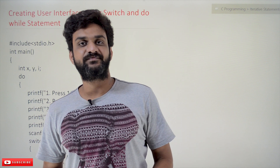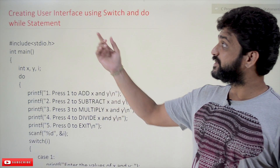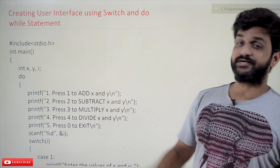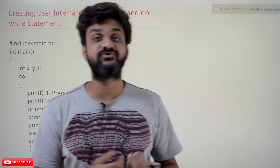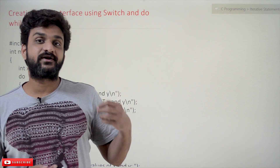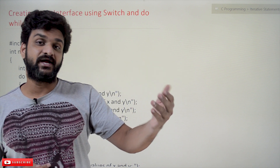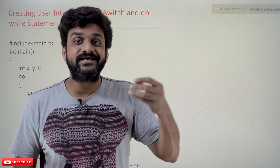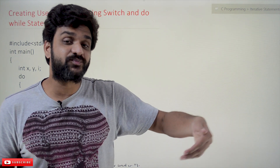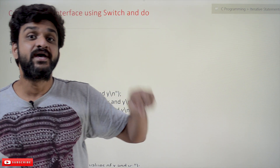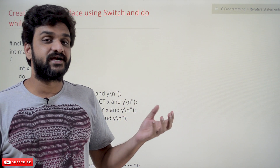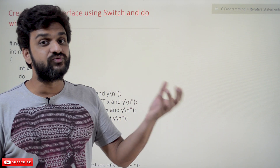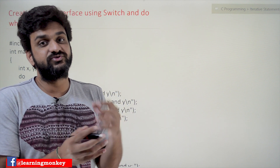Hi, welcome to Learning Monkey. I am Vikram. In this class we'll try to understand creating user interface using switch and do-while statements. Whenever we are writing a program, the end user should know what's happening. We have to provide an interface so that the user can easily understand what he has to do. That is what we call user interface. For better user interface, the do-while loop and switch statements are used in combination.